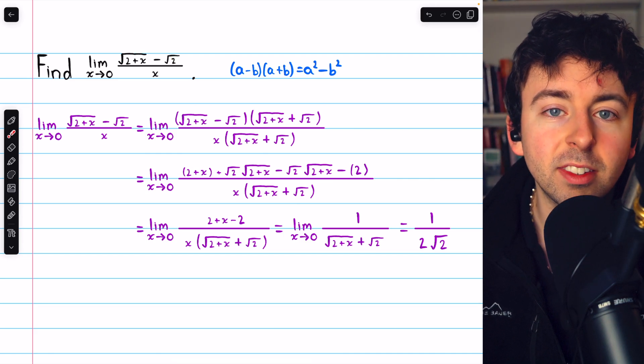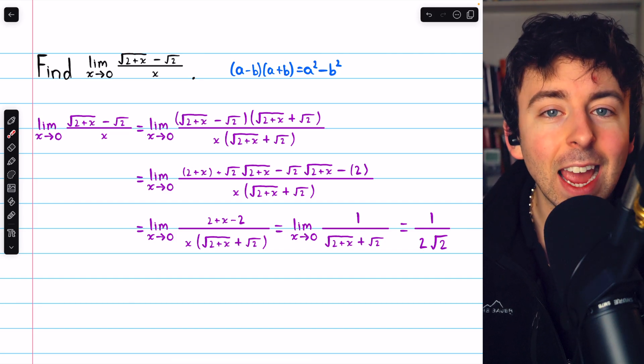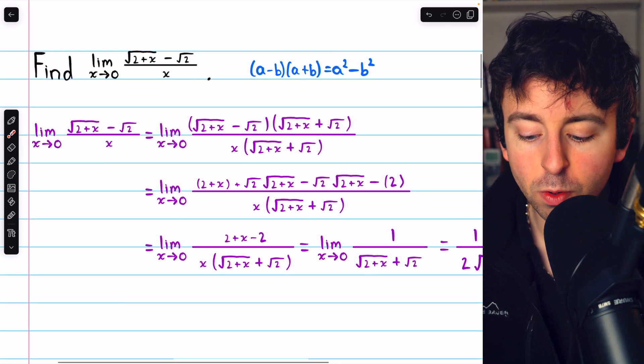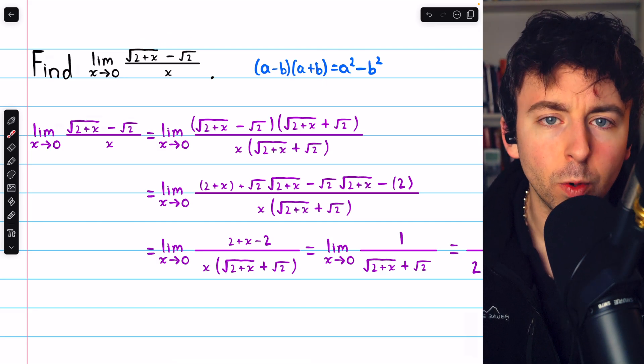There's nothing special about 2 here. We would solve it the same way, no matter what number was there under the square root. Again, we use the conjugate to produce the difference of squares because that eliminates those messy square roots.